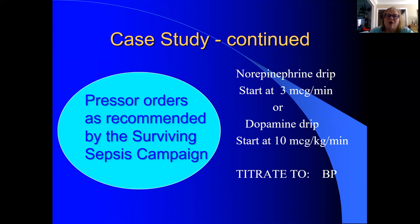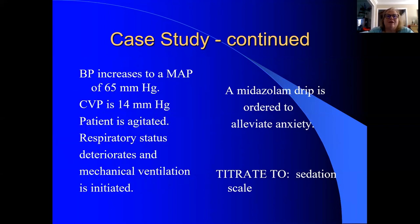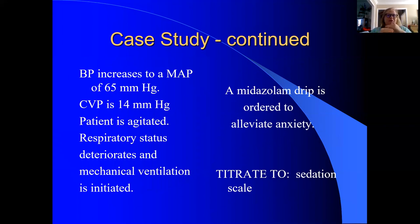Her blood pressure increases to a mean arterial pressure of 65. Remember, MAP is about cardiac output and systemic vascular resistance. MAP is 65 — we want it above 65. CVP is 14, getting a little bit high, so we have to start being careful about fluid — we're no longer thinking fluid resuscitation, we're thinking vasopressors. She starts to become agitated. Her respiratory status deteriorates — remember she was on 40% oxygen — and we have to start mechanical ventilation. She has to be intubated and ventilated.